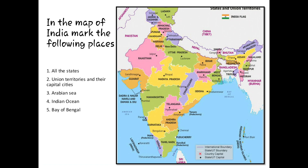Now we are moving to map marking. On the map of India, you are supposed to mark the different places. Here I have shown you an example; on the side you are having a picture of the map of India where you are supposed to learn this and mark it in a plain map and paste it in your notebook, as we have done in standard 8.